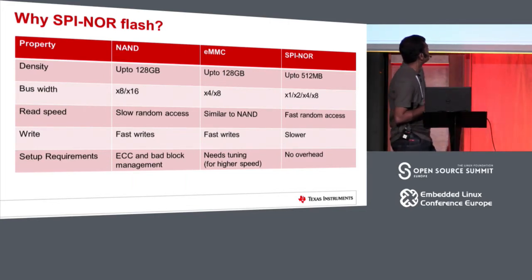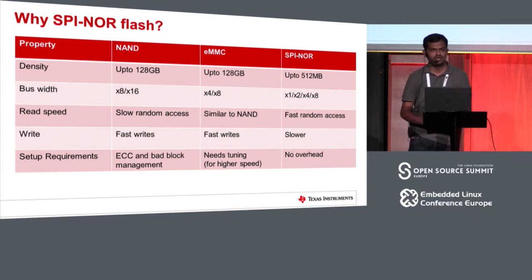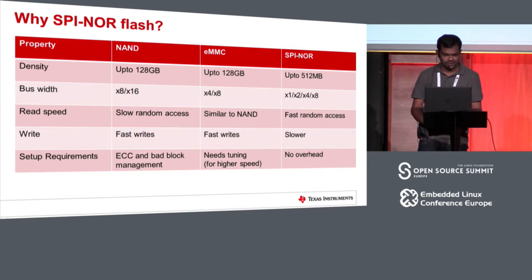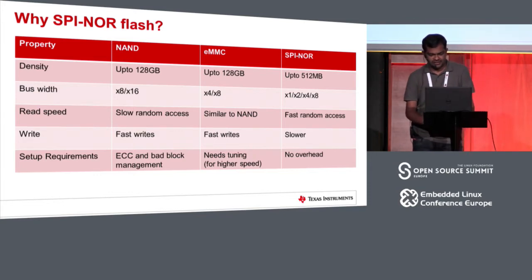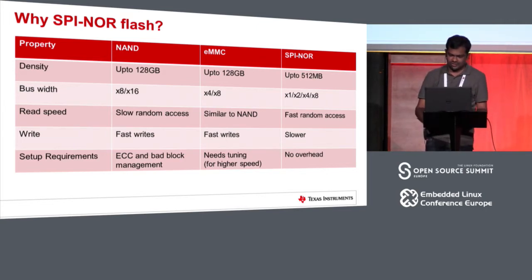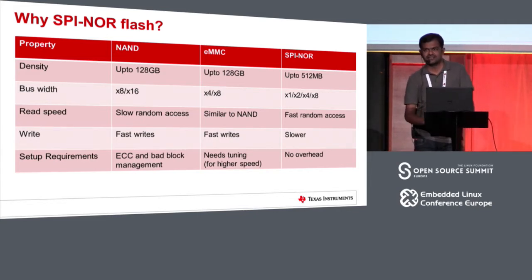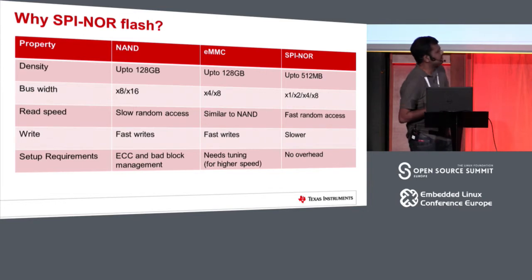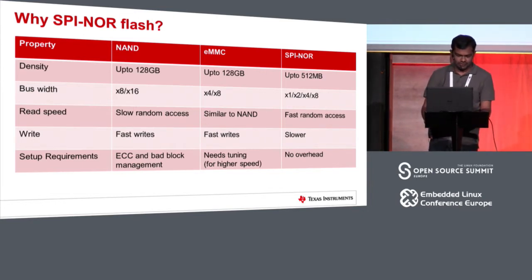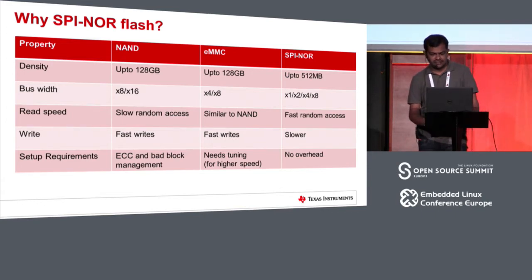This table tries to compare SPI NOR with NAND and eMMC, which are the other two most common non-volatile storage media found on embedded boards. In terms of capacity, SPI NOR flashes are in the range of megabytes, whereas NAND and eMMC are available in gigabytes. NOR flash have somewhere around one to eight IO lines, but NAND and eMMC may have up to 16 IO lines. The read speed shows that SPI NOR has fast random access — the time to access the first byte is usually in the order of nanoseconds, whereas NAND and eMMC have random read access speed in the order of microseconds.